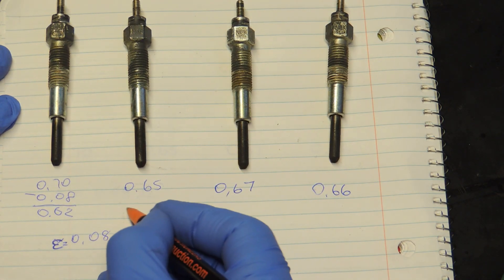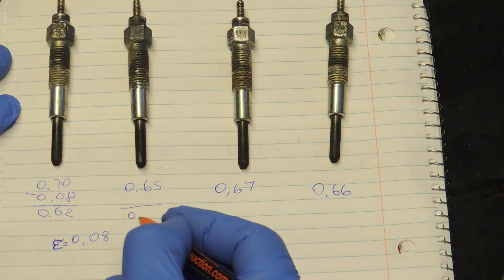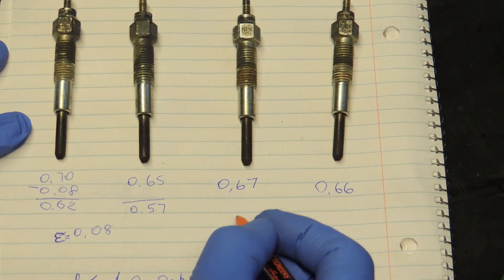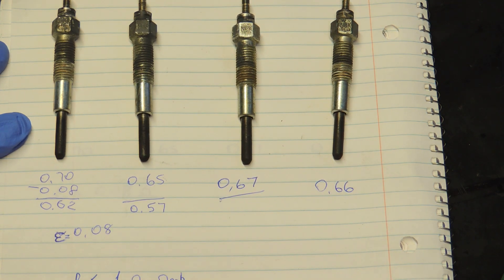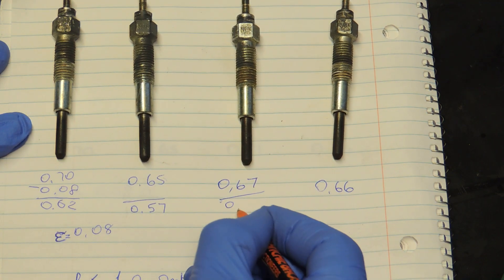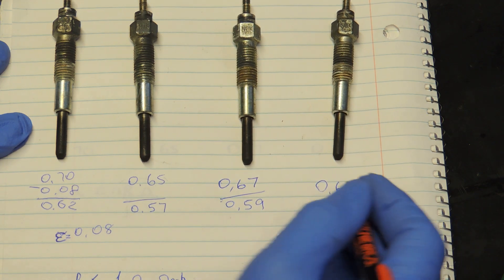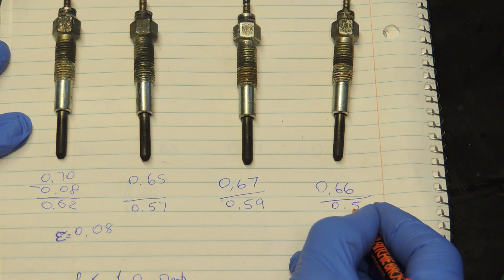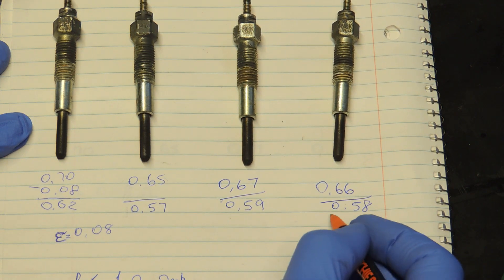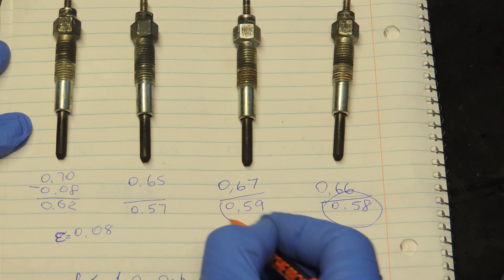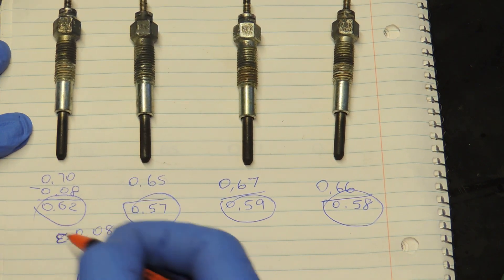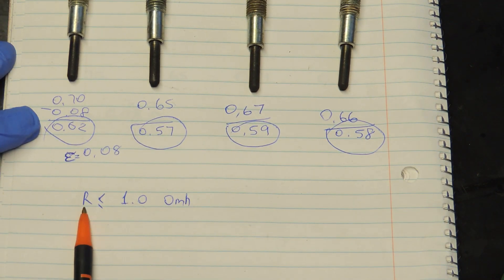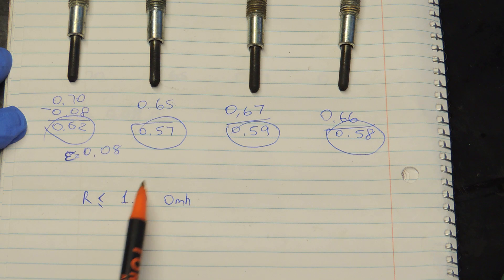As you can see glow plugs showing good resistance. 0.62, that's the first one, that is the second one 0.57, number three. That's the idea, that's pretty much what we want to see, around one ohm. You don't want to see resistance too high but that's ideal, be around one ohm. As I said always refer to your owner's manual and check your manufacturer specs.